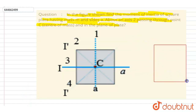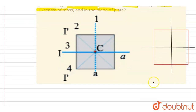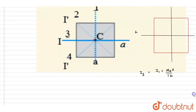The moment of inertia of this square plate about the axis passing through the center and in the plane is the same as that of a rod. So I will write down I₁ equals ma²/12. This is axis 1 and axis 3, so I₁ and I₃ are both equal to ma²/12.